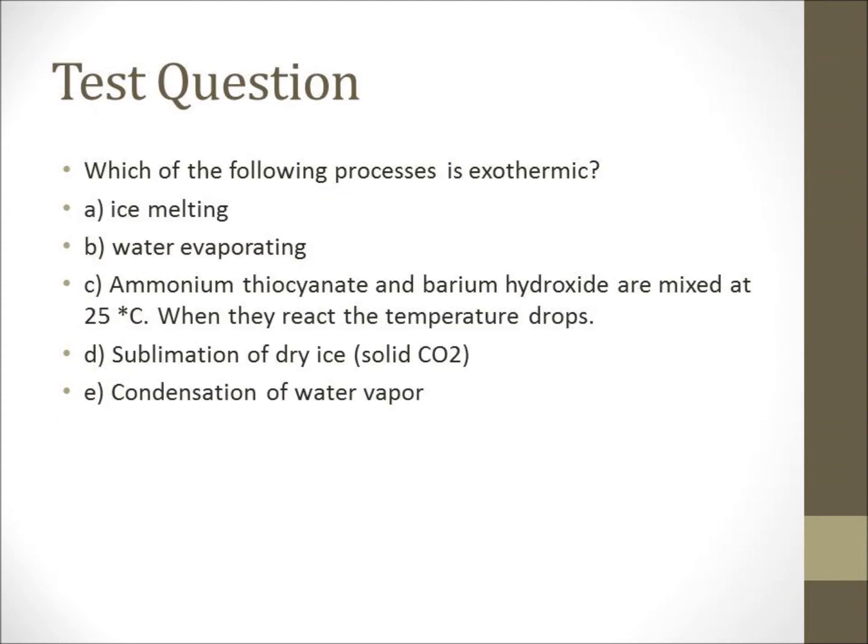Which of the following processes is exothermic? A: ice melting. B: water evaporating. C: ammonium thiocyanate and barium hydroxide mixing at 25 degrees Celsius — when they react, the temperature drops. D: sublimation of dry ice, which is solid carbon dioxide. Or E: condensation of water vapor.